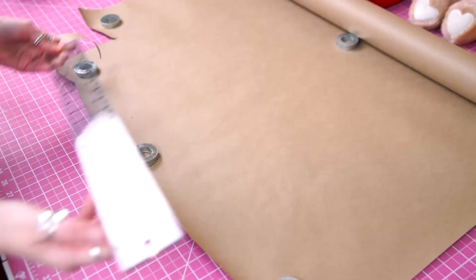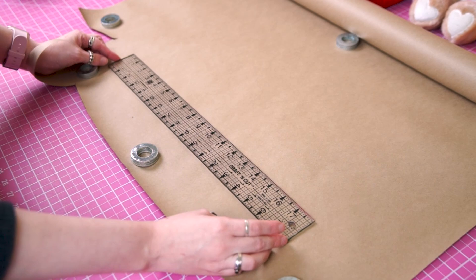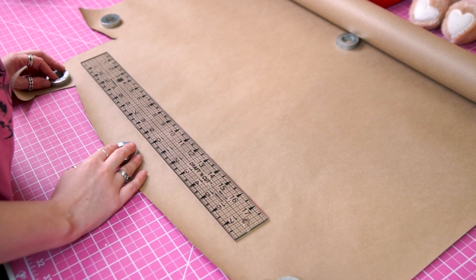First we need to draft a pattern. You want to start by measuring around your head where the crown will sit. For me that's 21 inches. Then we divide that number in half since our pattern will be designed to be cut on a fold. For me that's 10 and a half inches.